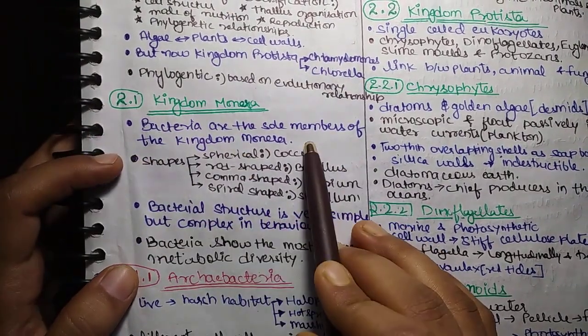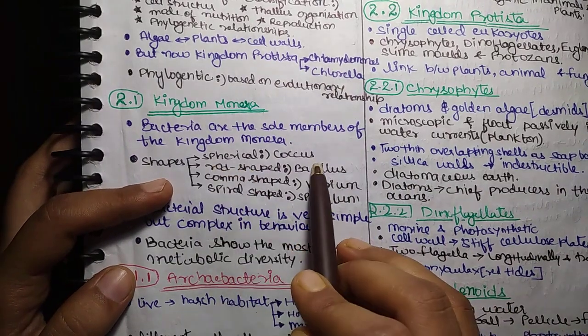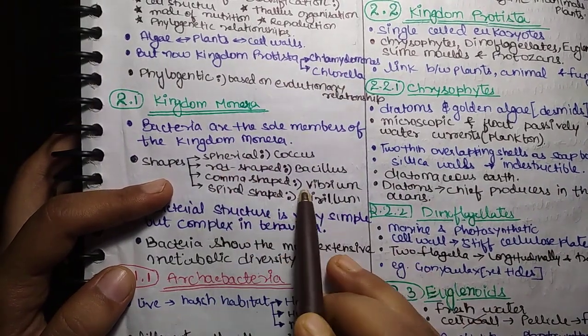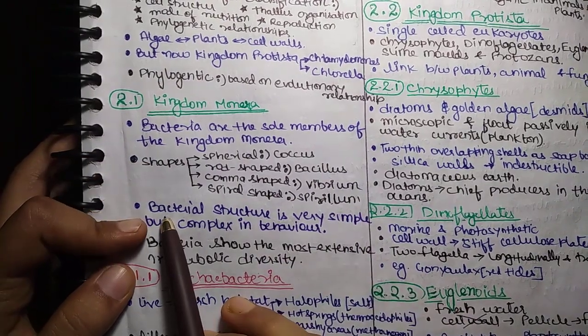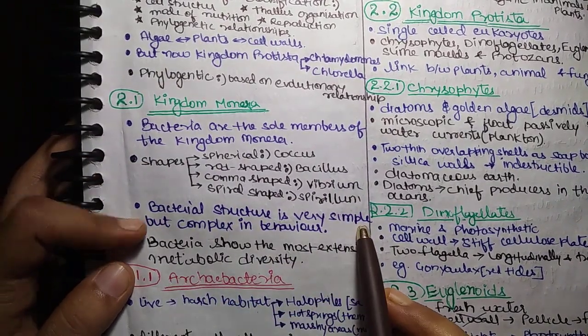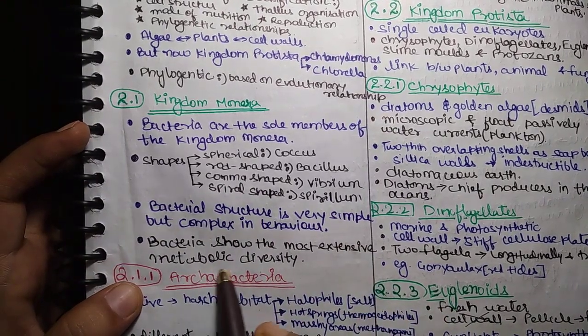Bacteria are the sole members of the Kingdom Monera. Shapes: Spherical Coccus, Rod-shaped Bacillus, Comma-shaped Vibrio, Spiral-shaped Spirillum. Bacterial Structure is very simple but complex in behavior. Bacteria show the most extensive metabolic diversity.